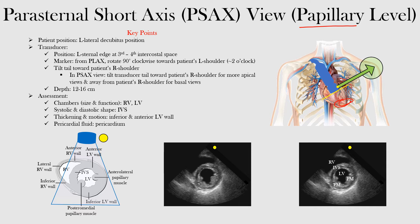We have the patient in the left lateral decubitus position. We have the transducer positioned at the left sternal edge between the third and fourth intercostal space — that's usually optimal. And then you want the marker. If you remember the parasternal long axis view, recall this is the right shoulder of the patient, this is the left side of the patient. What we had in the parasternal long axis view, we had the transducer marker directed towards the right shoulder.